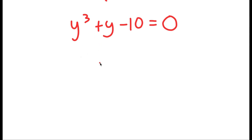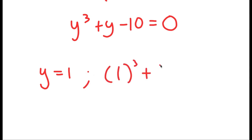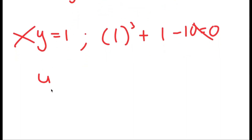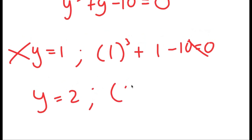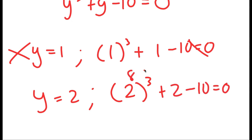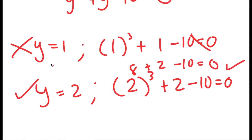I need to find one solution of y first. I'll test values: when y equals 1, I get 1 cubed plus 1 minus 10 equals negative 8, which does not equal 0, so that doesn't work. When y equals 2, I get 2 cubed plus 2 minus 10: that's 8 plus 2 minus 10 equals 0, so y equals 2 is a solution.